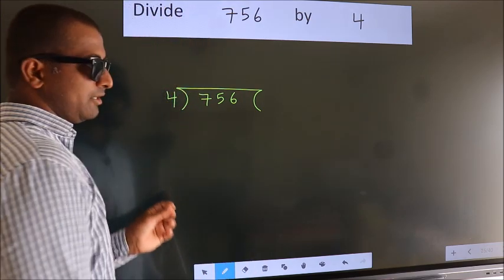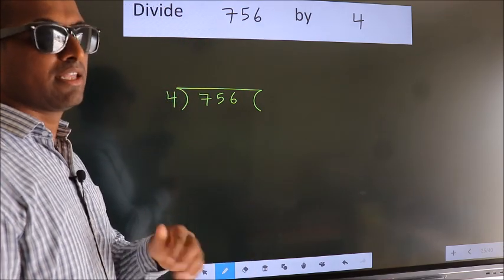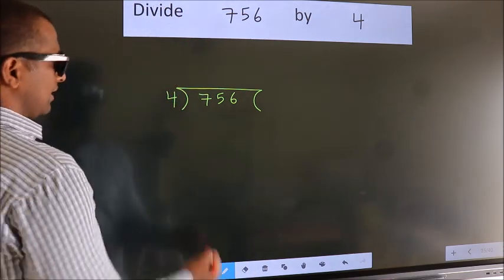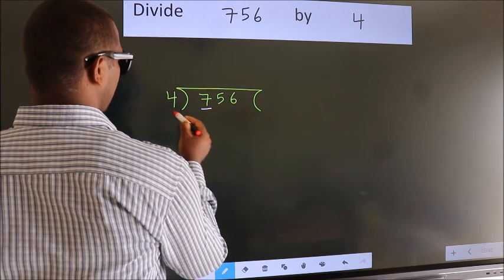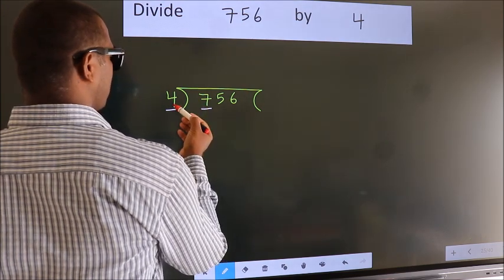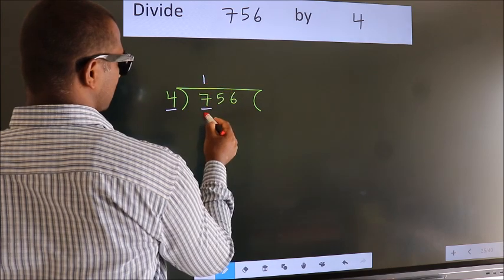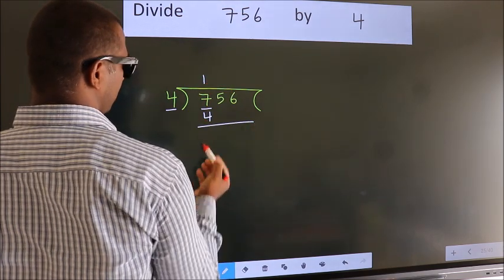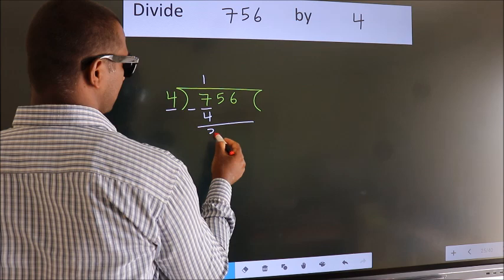This is your step 1. Next, here we have 7, here 4. A number close to 7 in 4 table is 4 once 4. Now, we should subtract. We get 3.